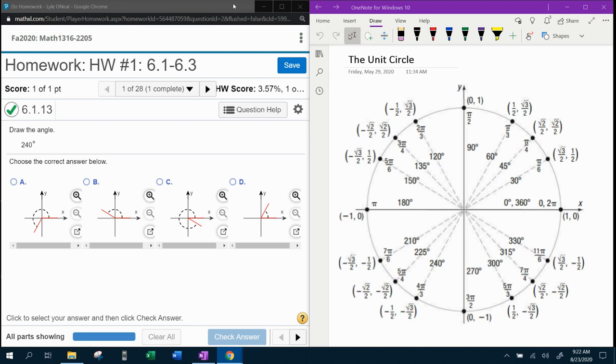So over here in our unit circle, notice that the positive x-axis starts at zero degrees and that the angles increase going counterclockwise. So we want to go to 240 degrees. So we're going to start at zero and we're going to come around until we get to 240 degrees.